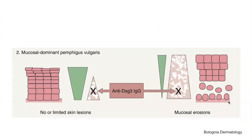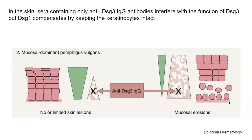In mucosal dominant pemphigus vulgaris, the target is Desmoglein 3. Autoantibodies against Desmoglein 3 interrupt the function of the mucosal membrane because DSG3 is the dominant protein expressed throughout the mucosal membrane layers, and DSG1 is not able to compensate. Whereas in the skin, there is ample DSG1 compensation throughout, and therefore there are minimal cutaneous or skin findings in this form of pemphigus vulgaris.